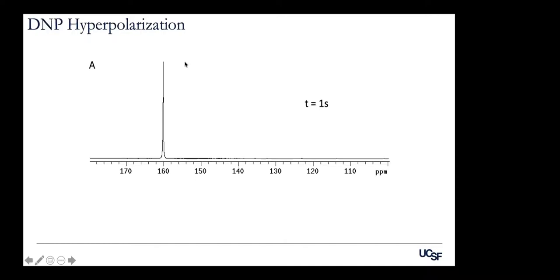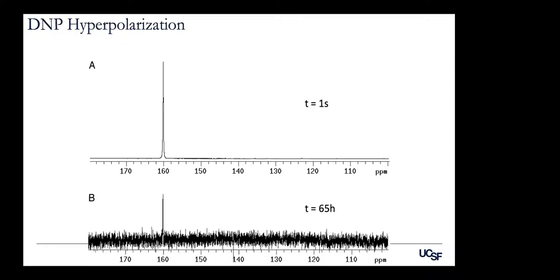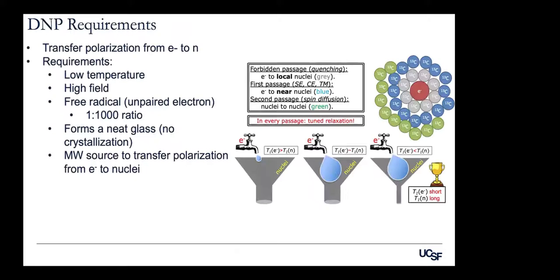In practice, a small amount of hyperpolarized urea goes into a Hypersense polarizer, builds up for an hour, and is then dissolved. A single spectrum scan with a 90-degree tip angle and one FID gives a dramatic result. Comparatively, putting that sample into a 9.4 Tesla magnet at Boltzmann equilibrium would require 65 hours of averaging at the Ernst angle to obtain a comparable result. This dramatic increase in signal-to-noise allows experiments that would otherwise require inordinately long averaging times.